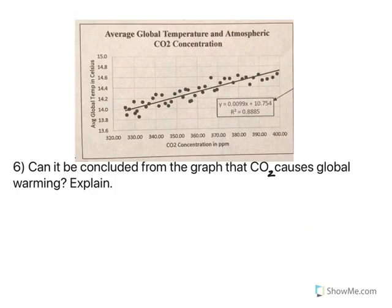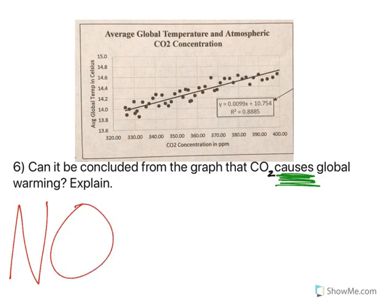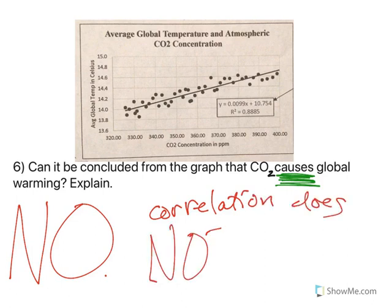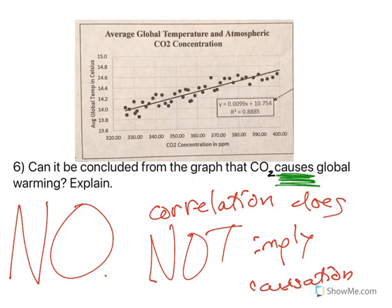Can it be concluded from the graph that CO2 causes global warming? The answer is no, because correlation does not imply causation. Yes, there is a relationship — we have shown there is a relationship — but a relationship does not mean that one causes the other. There are so many other factors to consider. We can say there's a relationship, and that is all we can say.